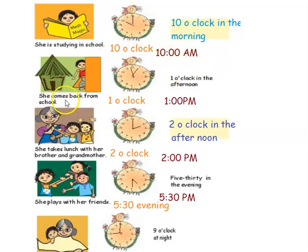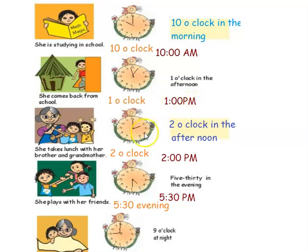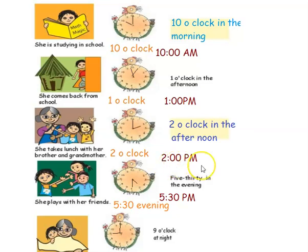The next activity is she comes back from school. The given time is 1 o'clock in the afternoon. To represent 1 o'clock, the shorter hour hand should be at 1 and the longer minute hand should be at 12, so it represents 1 o'clock. Since it is 1 o'clock in the afternoon, we write it as 1 p.m. The next activity is she takes lunch with her brother and grandmother. The clock shows the hour hand at 2 and the minute hand at 12, so it is exactly 2 o'clock in the afternoon — 2 p.m.